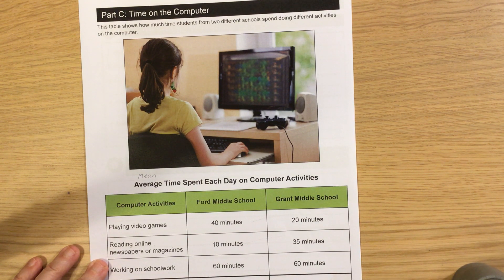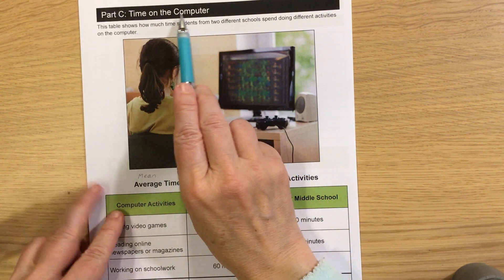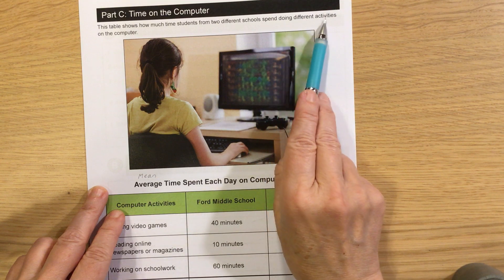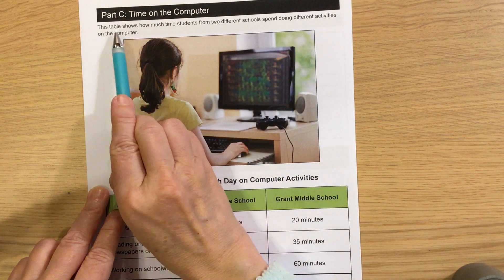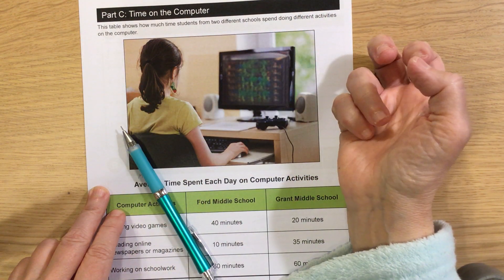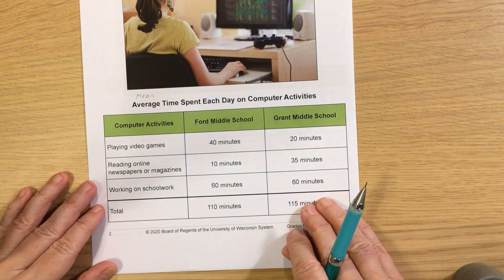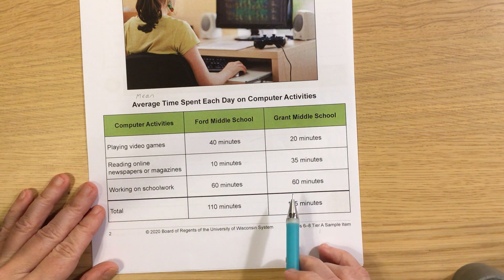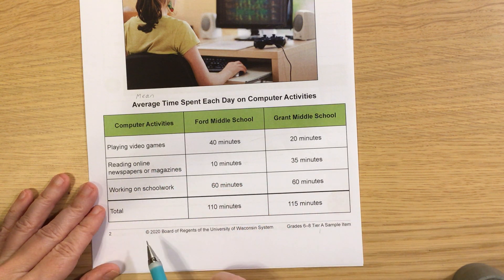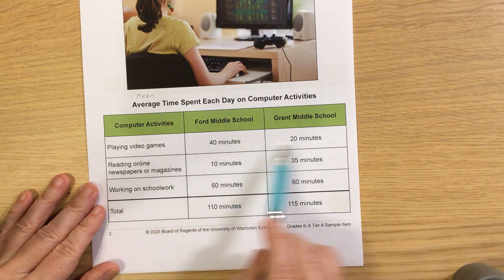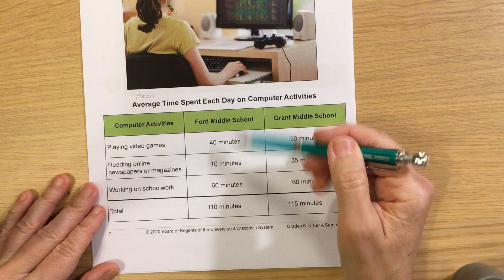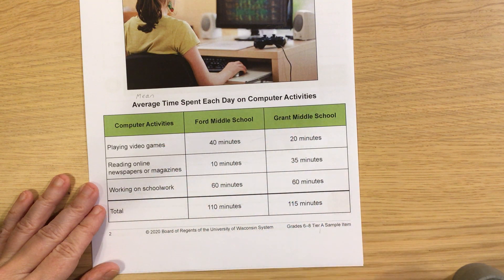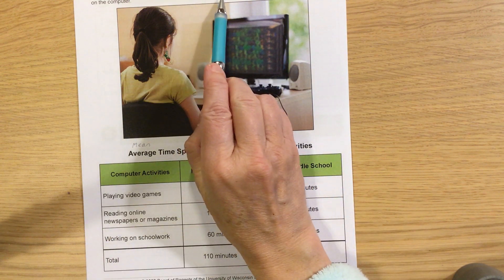Let's take a look at this first one — it says 'Time on the Computer.' This table shows how much time students from two different schools spend doing different activities on the computer. The word 'table' here is a math word — something that has numbers and words with lines going up and down and lines going across. We call these columns and rows. There will be a title that helps us know what the information means.